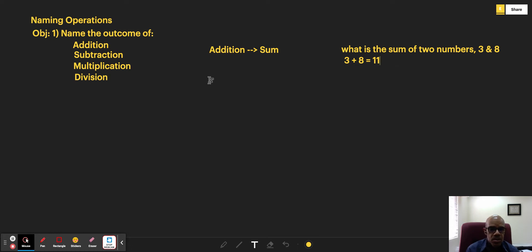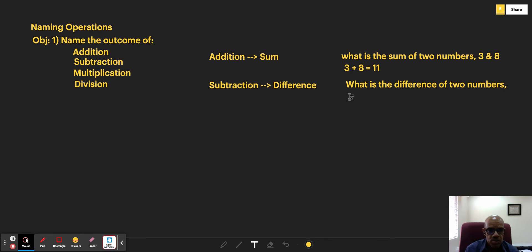Now the outcome of subtraction is different. If we said, what is the difference of two numbers, 17 and 6? What we're asking here is what is 17 minus 6.